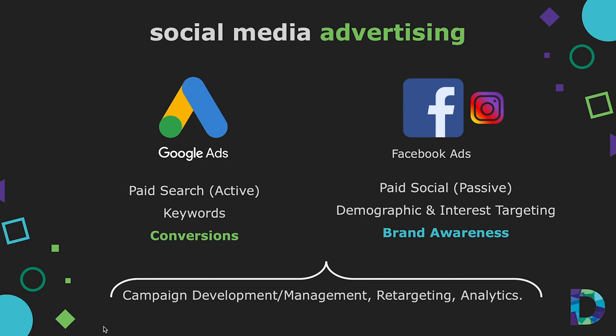Since social media ad placements were covered in a previous session, let's look at some key differences between paid search and social media advertising — specifically Google and Facebook. Both platforms let you target ads to defined customer segments. However, Google Ads is based primarily on paid search and keyword strategies. Because audiences are actively searching for something specific, Google ad strategies are often considered active and most frequently focused on conversions.